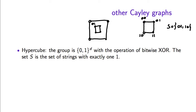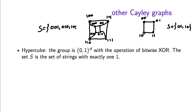This is the 8-vertex hypercube. Here S is again the set of all binary strings with exactly one 1. Every two vertices connected in the three-dimensional hypercube are pairs whose bitwise XOR is in this set. For example, along one edge the bitwise XOR is 100, and along another the bitwise XOR is 001. The d-dimensional hypercube is a d-regular graph.